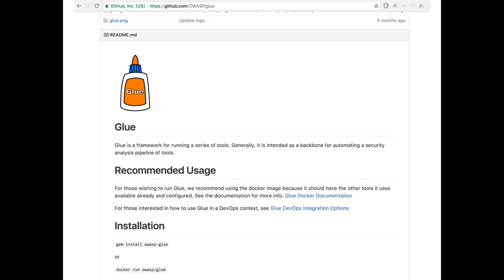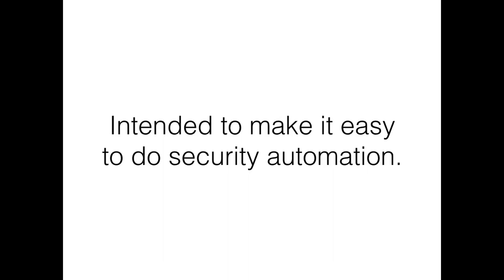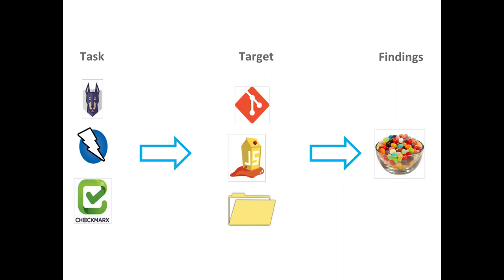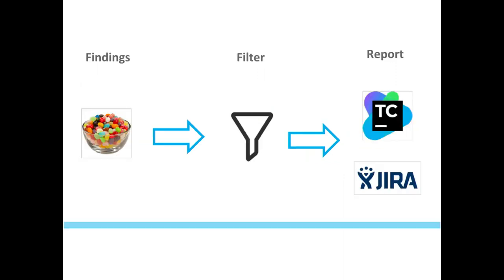It's at OWASP Glue on GitHub. What we're trying to do is make automation easier — in a lot of ways it's not a security tool, it's more of a meta tool to make automation easier. The idea is we're taking a task like SNCC, ZAP, Checkmarx, and so forth. We want to run it, figure out what we're going to run it against, collect findings, filter them out because most tools have false positives, and then report those somewhere like Jira or TeamCity.